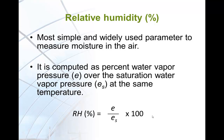Relative humidity is the most simple and widely used parameter. It is computed as the percent water vapor pressure over the saturation water vapor pressure at the same temperature, as shown in the equation. Water vapor pressure means water vapor concentration on a volume basis. Relative humidity means the ratio of the current concentration of water vapor to the potential maximum water vapor concentration that air can hold at that temperature.